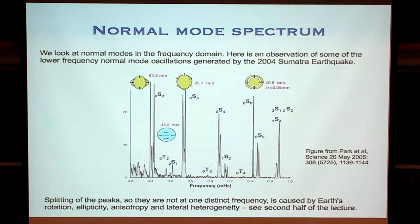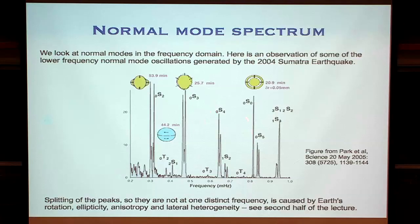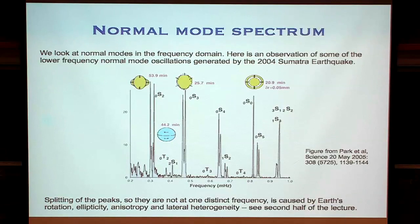This is one of those Fourier-transformed seismograms, taken after the Sumatra earthquake. We see individual spikes in the frequency domain. Each spike corresponds to one of the notes of the Earth ringing — each individual frequency corresponds to the frequency at which the Earth shakes in a particular way. The eagle-eyed among you will notice that sometimes there are multiple spikes where there's only one label. That's a phenomenon called normal mode splitting, which we'll get to at the end of today.